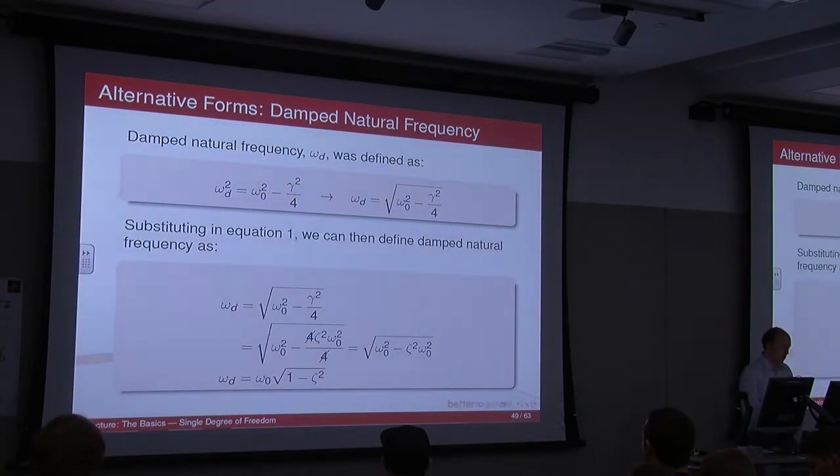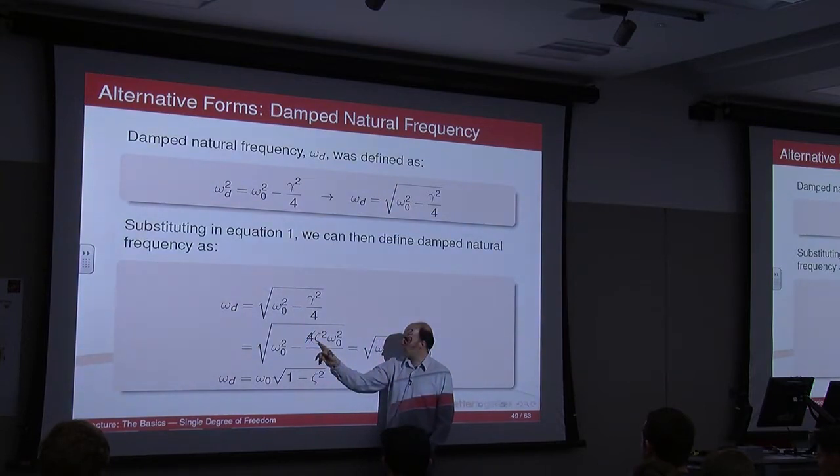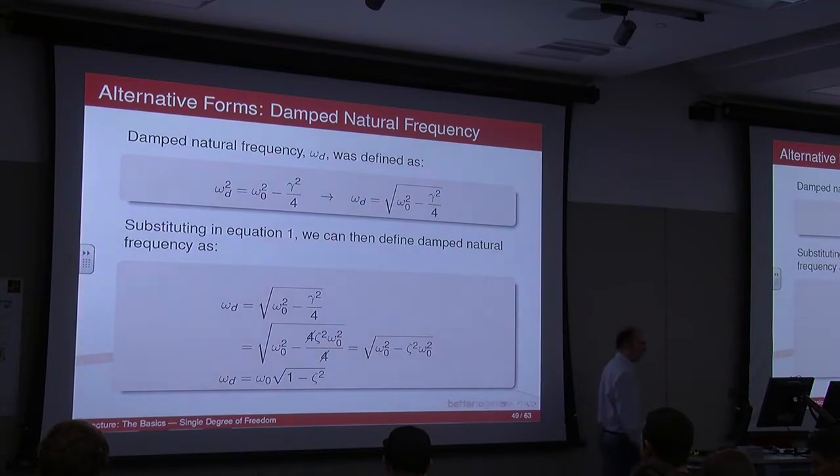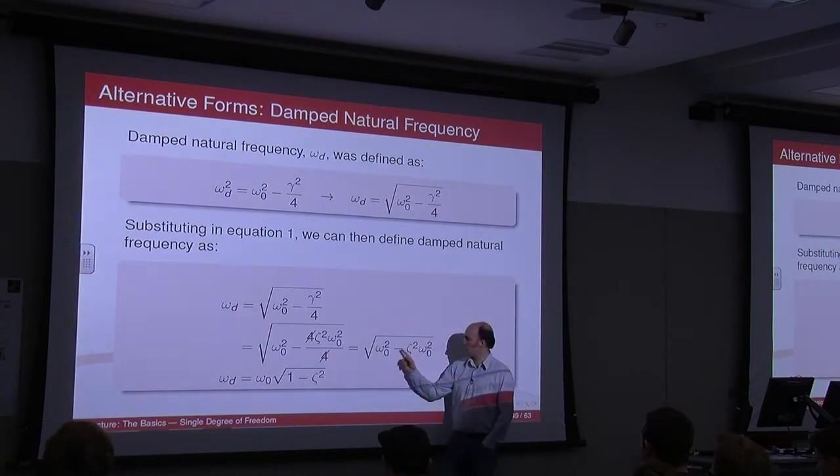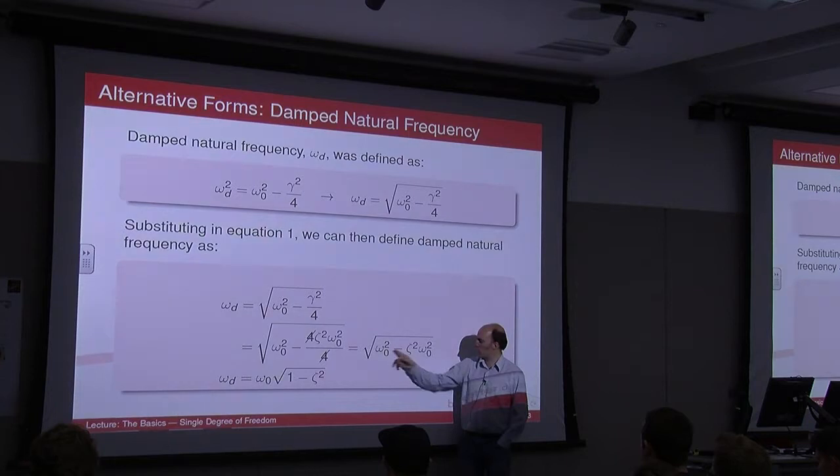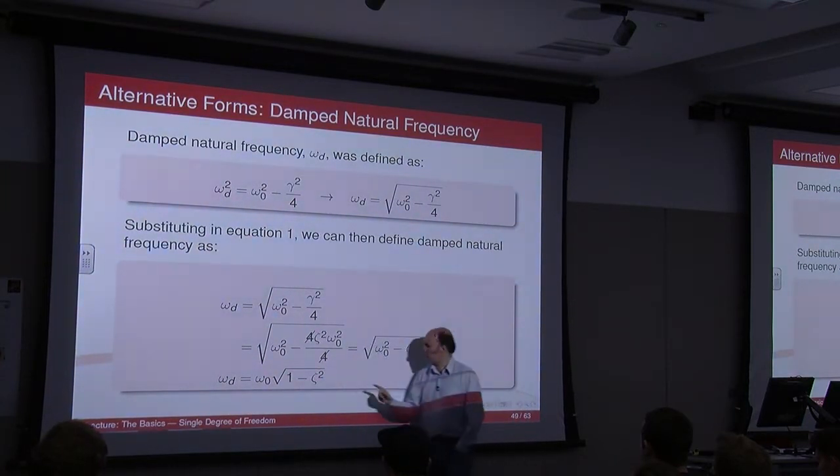And what we can do is we can rearrange. Instead of gamma squared, we can put 2 squared, which is 4, zeta squared and omega naught squared into this equation. And you can do some rearranging. The 4s will cancel. So you have omega naught squared minus zeta squared omega naught squared. Well, there's an omega naught squared in both of those terms, so that can come out down here, and you end up with 1 minus zeta squared.